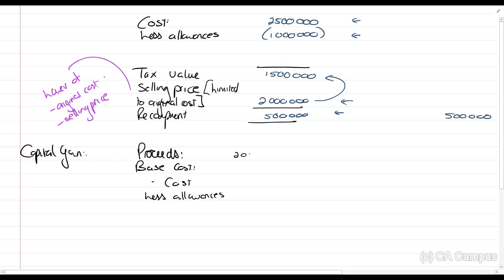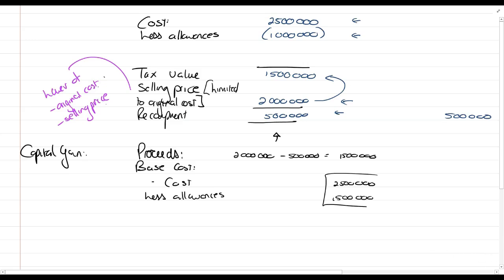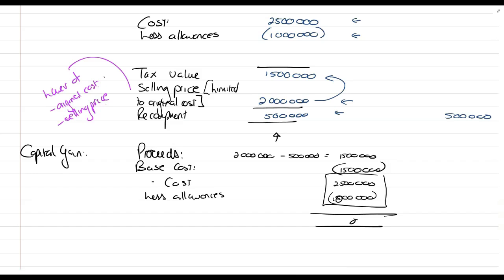The 500,000 rands goes in as recoupment. Our proceeds are the actual selling price of two million rands, less the recoupment of 500,000 rands. The base cost is cost of two and a half million rands less allowances of one million rands, giving a one and a half million rands base cost — and that gives us a nil capital gain. We didn't sell for more than the original cost, so we haven't made a gain.